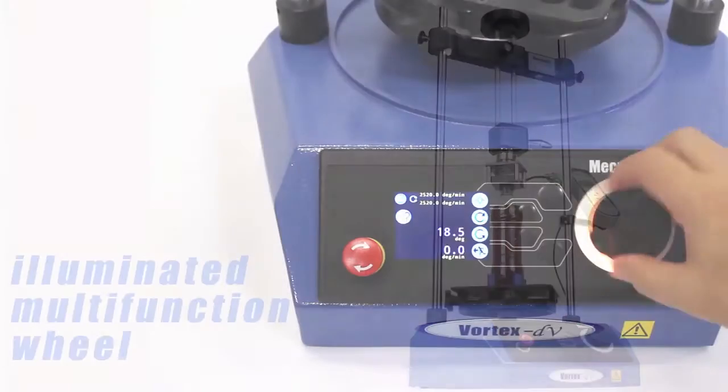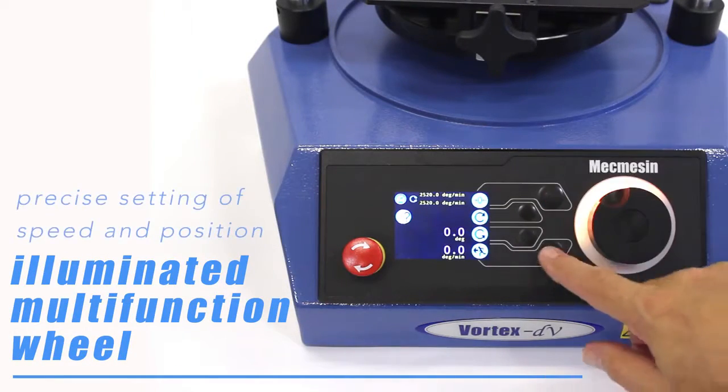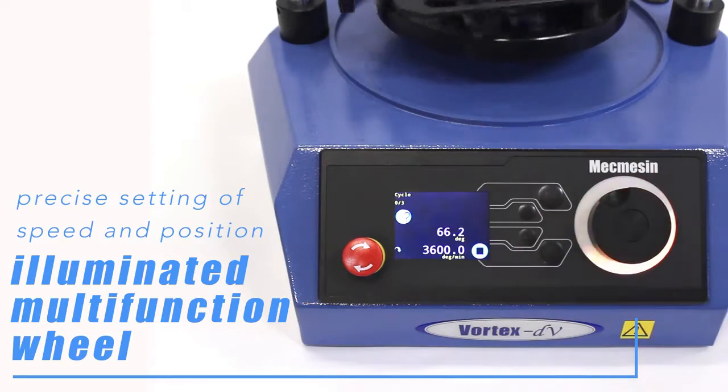The illuminated multifunction wheel is used for precise setting of speed and position. It's also used to accurately adjust the position of the sample before testing begins.